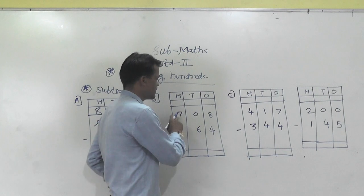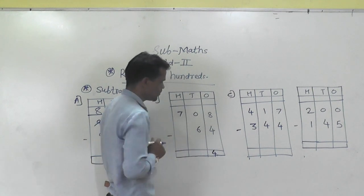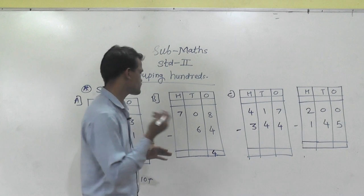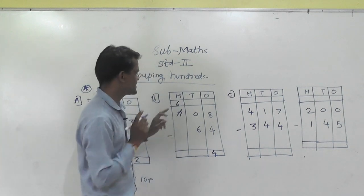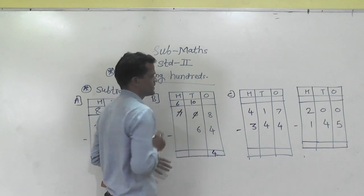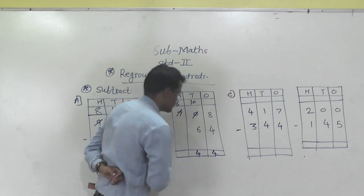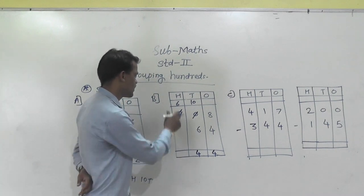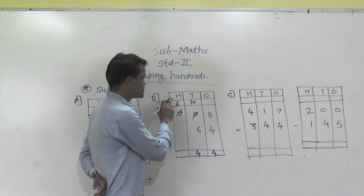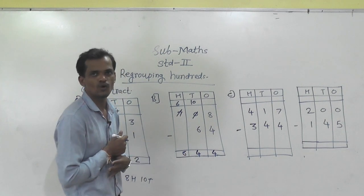Next example: 708 minus 64. Starting from the ones place: 8 minus 4 is possible — 4. Then 0 minus 6 is not possible. So regroup this 7 hundreds into 600 and 10 tens. Add the 10 tens into the 0 tens, giving 10 tens. So 10 minus 6 is 4. Then for the hundreds: 6 minus 0 is 6. So 644 is the answer.